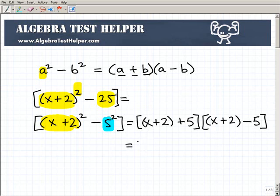And then a minus b would be x plus 2 minus 5. This would all simplify down to x plus 2 plus 5 is x plus 7 times x plus 2 minus 5, that's going to be minus 3, so that would be x minus 3.